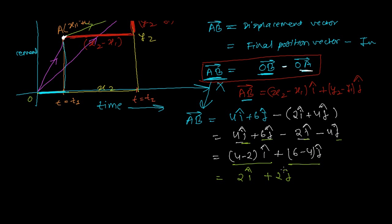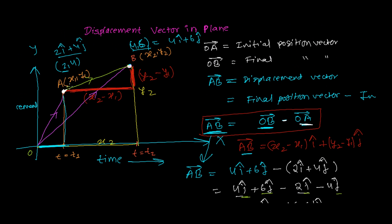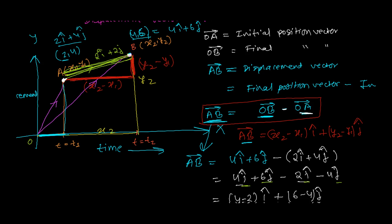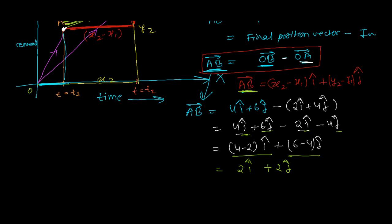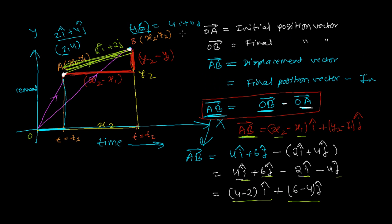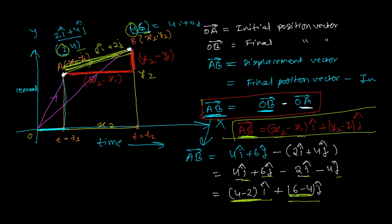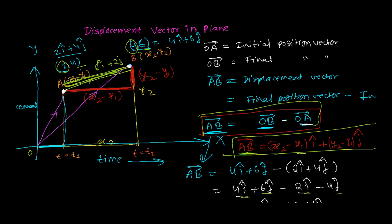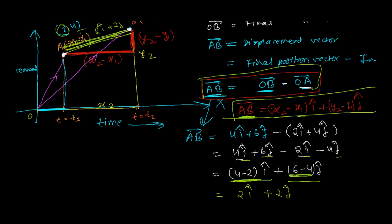This gives 2î + 2ĵ. You can verify using the direct formula: x2 − x1 = 4 − 2 = 2, and y2 − y1 = 6 − 4 = 2, giving 2î + 2ĵ directly. That's the displacement vector. Until we learn addition of vectors and the triangle law and parallelogram law of addition, we'll find displacement vectors this way — final position vector minus initial position vector.